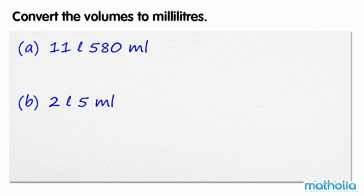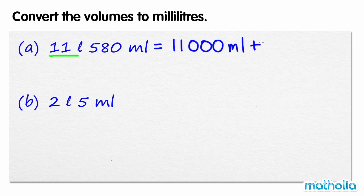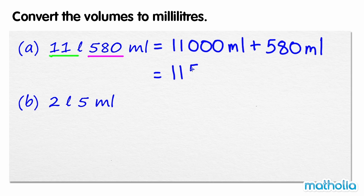Convert the volumes to millilitres. 11 litres is equal to 11,000 millilitres. So we can rewrite 11 litres 580 millilitres as 11,000 millilitres plus 580 millilitres, which is equal to 11,580 millilitres.